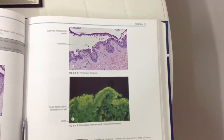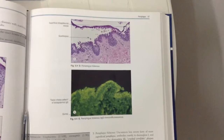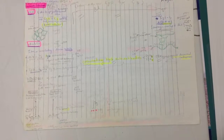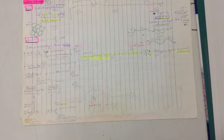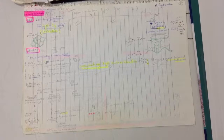Pemphigus foliaceous also shows a superficial intradermal vesicle with acantholysis. Regarding immunopathology: direct immunofluorescence is taken from perilesional normal skin and shows intercellular IgG and C3 in 100% of pemphigus cases. In pemphigus erythematosus, there is serological overlap with systemic lupus erythematosus, so there is additional IgG and C3 at the basement membrane zone.